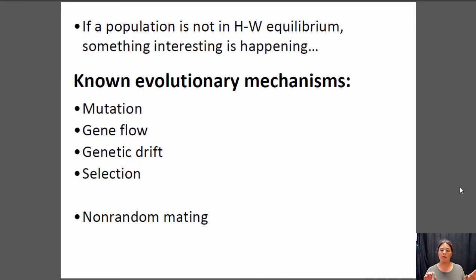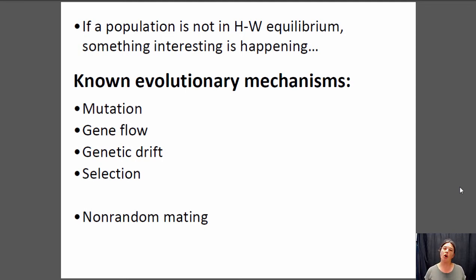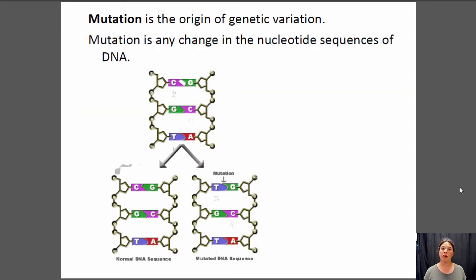Non-random mating is kind of separated off because, while it can disrupt Hardy-Weinberg equilibrium, it does not always lead to evolution — we'll explain why when we get to that one. So let's start with mutation. Mutation is any change in the genetic composition of an individual.